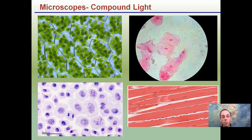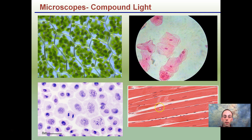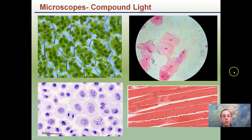These are some images taken with a compound light microscope — cheek cells, chloroplast, and muscle cells. Really useful for looking at different cell stages. You should be familiar with what images a compound light microscope produces so you're able to identify them.